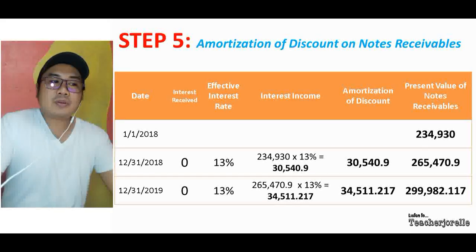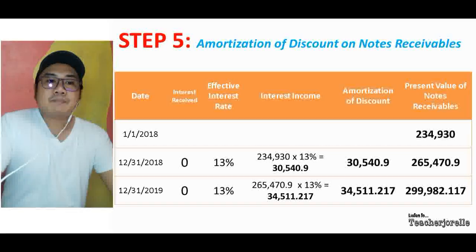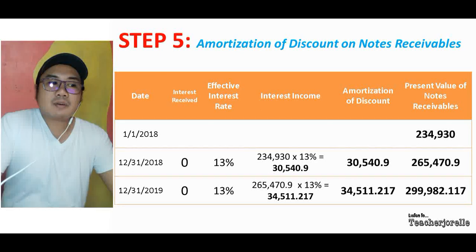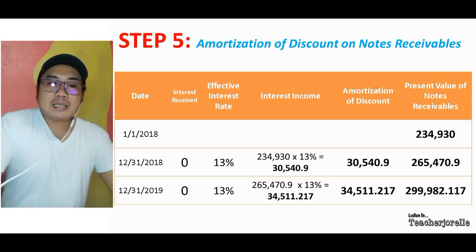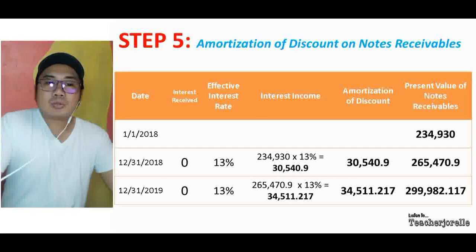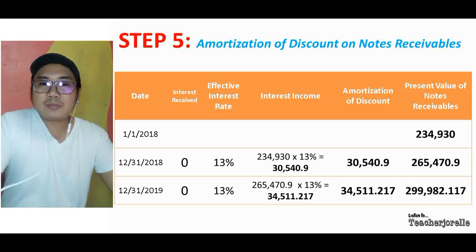For December 31, 2019 — Period 2 — interest received is still zero and the effective rate is 13 percent. To solve for the interest income, take the present value of the note receivable as of December 31, 2018 and multiply it by 13 percent. The result is 34,511.217 — that is also your amortization of discount. Adding it to the December 31, 2018 present value gives 299,982.117. That is how we solve for the present value of a non-interest bearing note receivable.